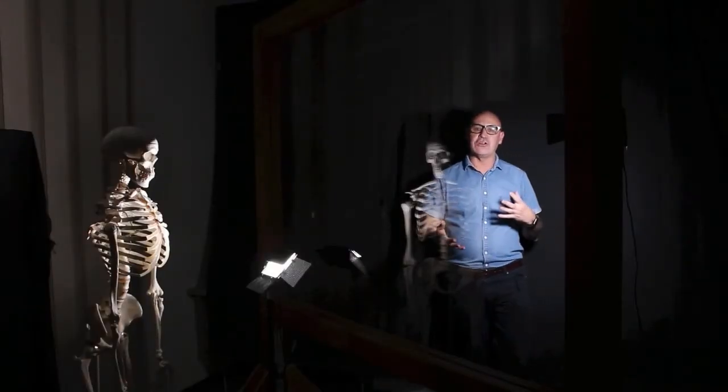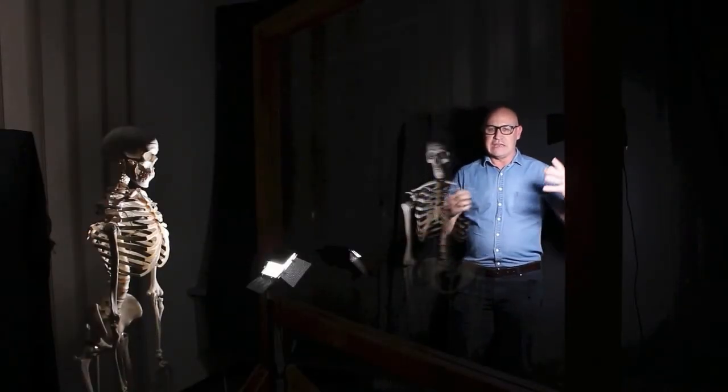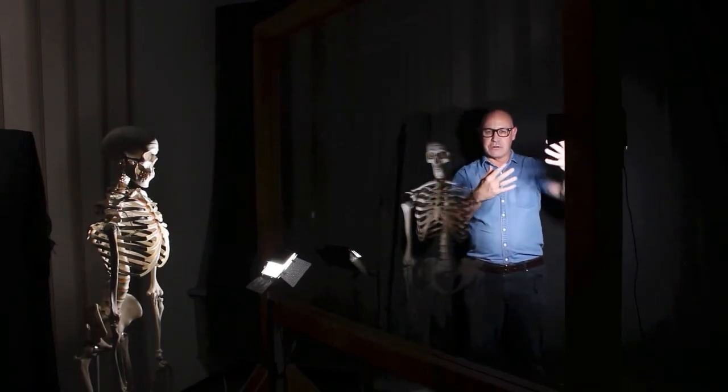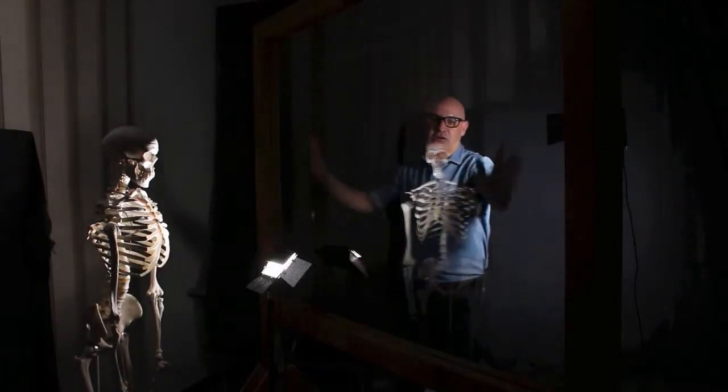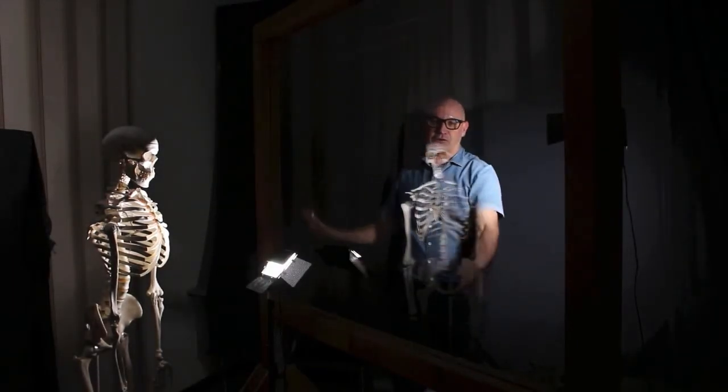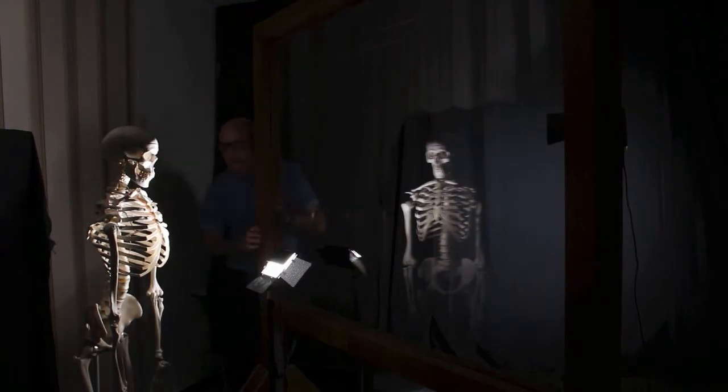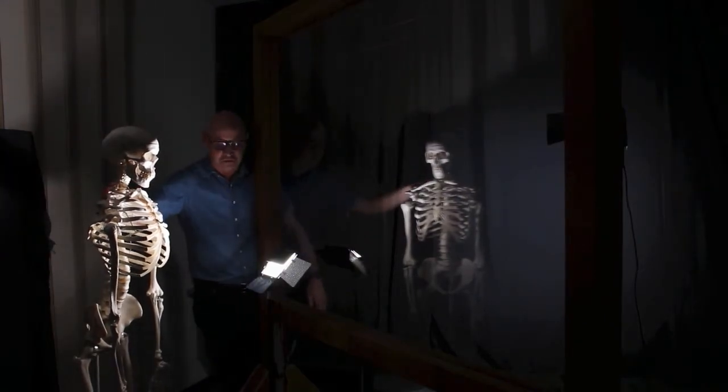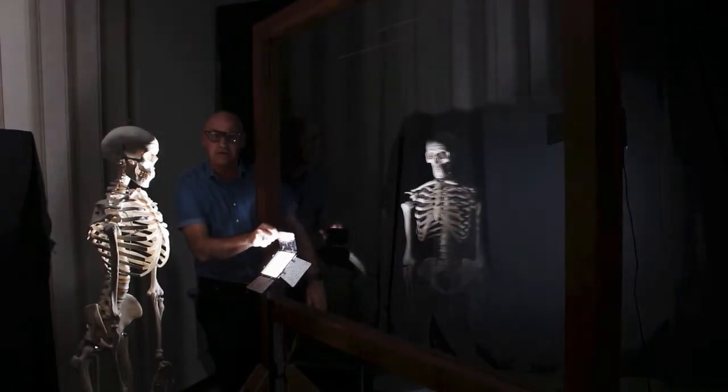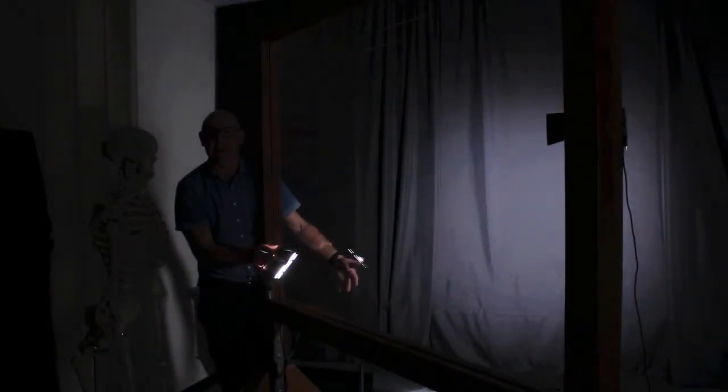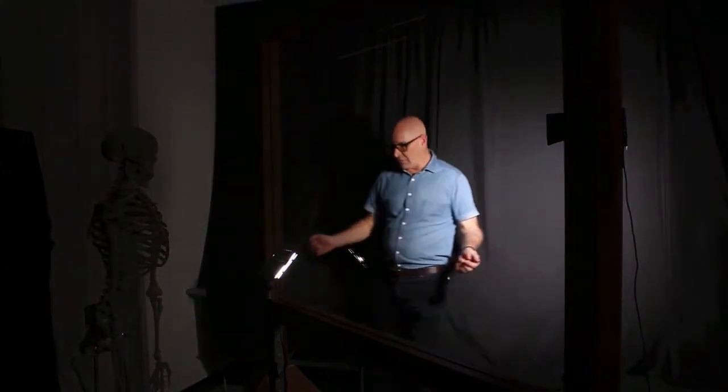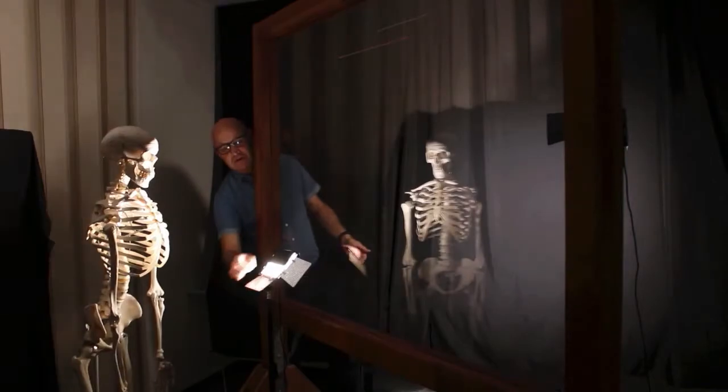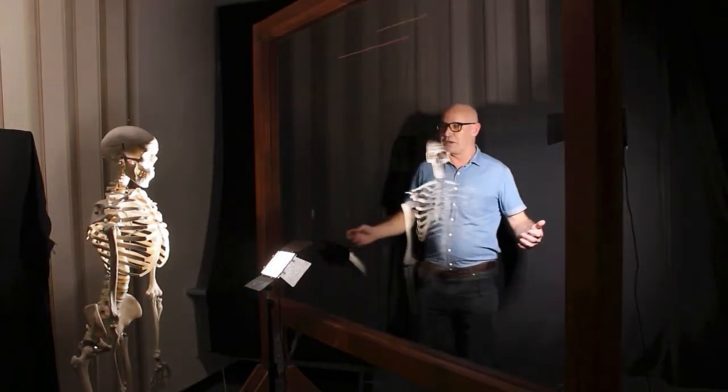So the way that the Pepper's ghost illusion is constructed is to have actors that are being illuminated. Then we have glass at 45 degrees. On the other side of the glass, we have our ghost that's also being illuminated. So when the ghost isn't being illuminated, you can't see the ghost. But then when the light goes on the ghost, the ghost appears.